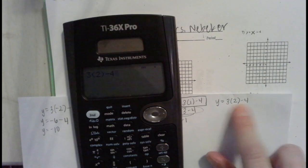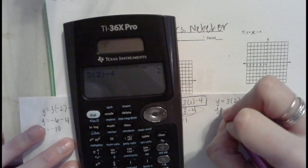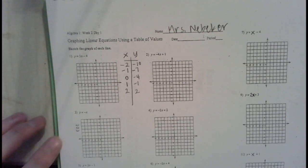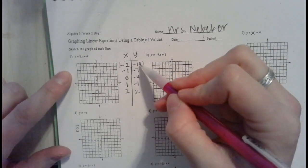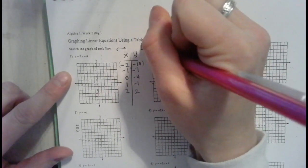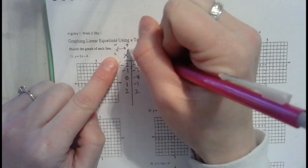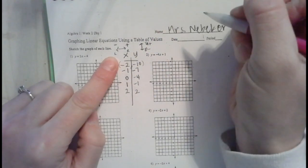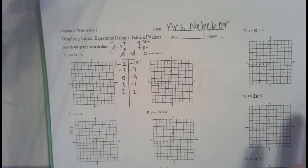So y equals 2 for x equals 2. Now we graph these ordered pairs. Remember, x values move left and right, y values move up and down. Going left is negative, right is positive for x; up is positive, down is negative for y. We have the point negative 2, negative 10, but that doesn't fit our grid.